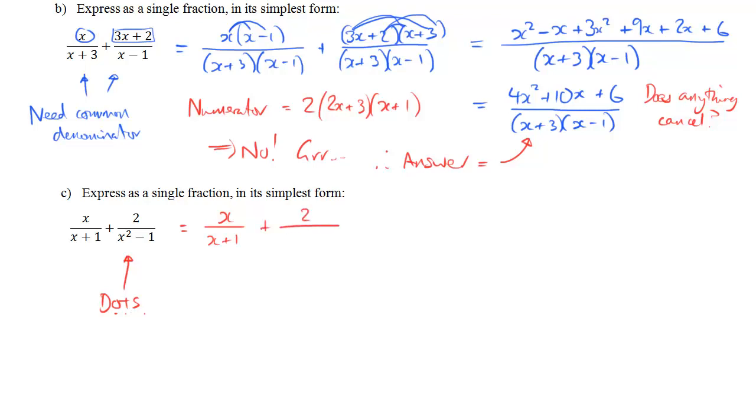So straight away, that means that our two denominators have a common factor. They both have x plus 1. So actually, all I need to do is change the first fraction so that it also has x minus 1 in the denominator. So I'll multiply top and bottom of that fraction by x minus 1. So doing that, I get x brackets x minus 1 over x plus 1 x minus 1. And the second fraction, I haven't changed that, so that stays the same. And now that's going to give me one fraction with x plus 1 x minus 1 as my denominator.